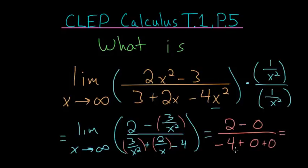So we're left with 2 over minus 4, which is minus 1 half. And minus 1 half is the answer to our limit.